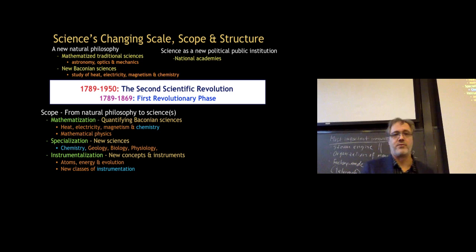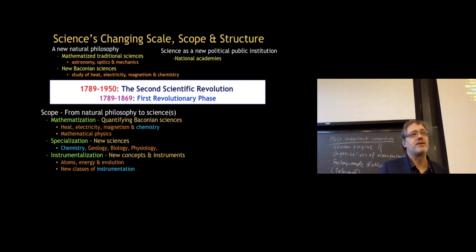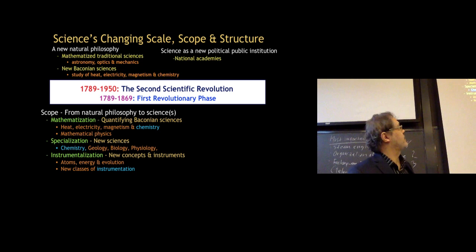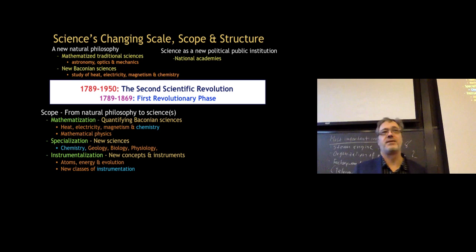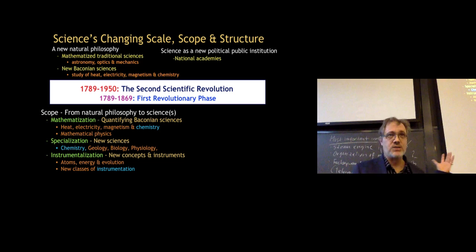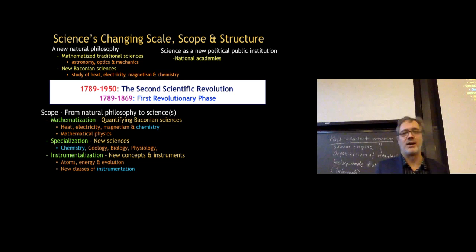During the Second Scientific Revolution, science is changing in scale, scope, and structure. In scope, it's going from natural philosophy to sciences. There's increasing mathematization of the Baconian sciences — heat, electricity, magnetism, and chemistry. Mathematical physics, or what we'd today describe as theoretical physics, is also being developed. We also see specialization — new sciences like chemistry, geology, biology, and physiology. Chemistry existed before this period, but it's during this time that it becomes a more formalized discipline.